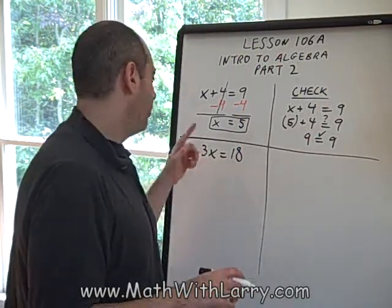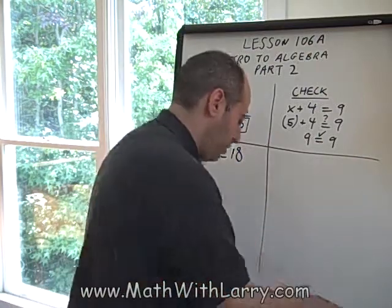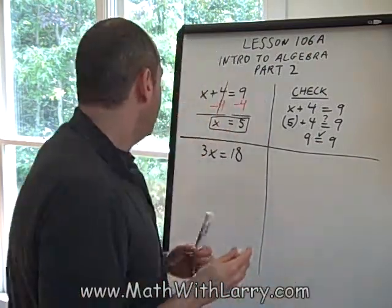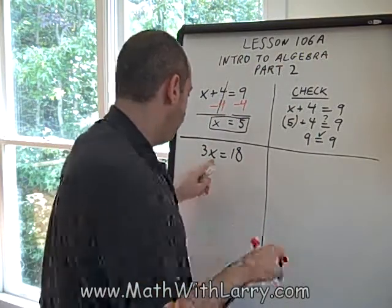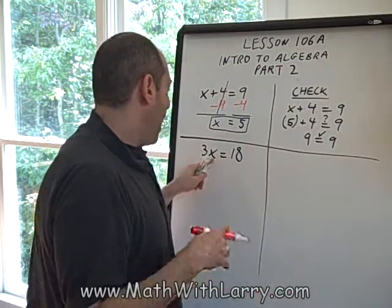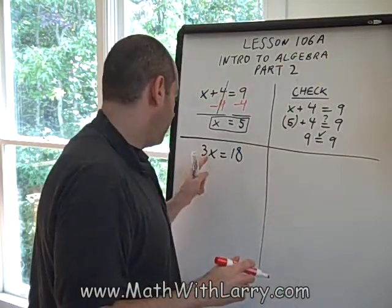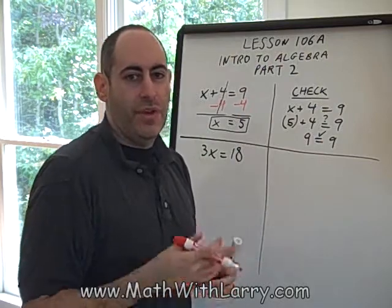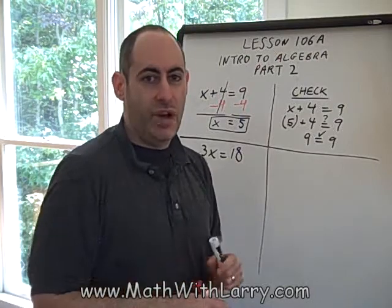Okay, so we're dealing with 3 times some unknown equals 18. Now this is a little bit different than what we've seen. So remember our thought process. We're starting with x, and we look to see what's being done to it. Here, what's being done to it is it's being multiplied by 3. Now how do we undo multiplying by 3? We know that the opposite of multiplying is dividing.